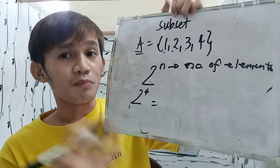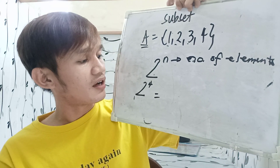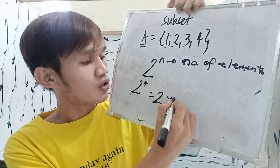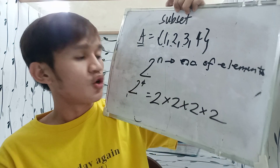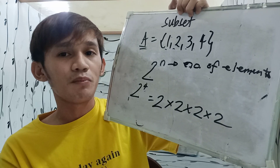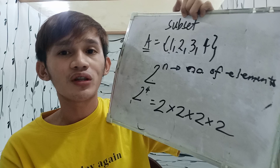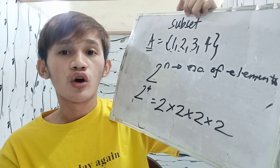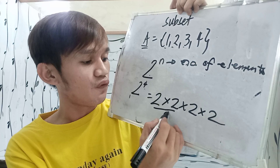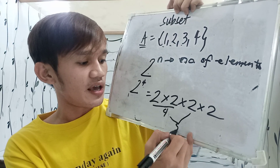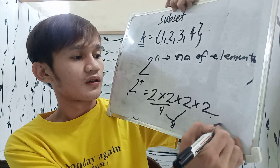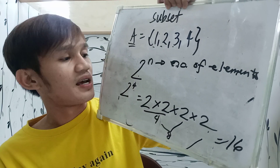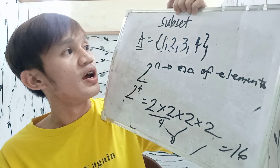2 raised to 4 does not mean 2 times 4. You are going to multiply 2 by itself 4 times: 2 times 2 times 2 times 2. So 2 times 2 is 4, 4 times 2 is 8, and 8 times 2 is 16. Meaning, the total number of subsets of SET A is 16 subsets.